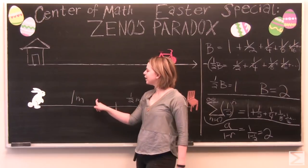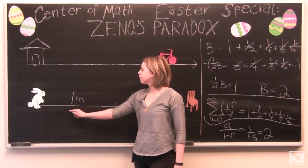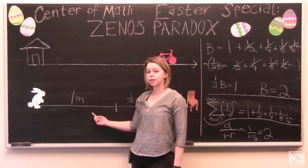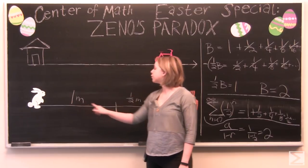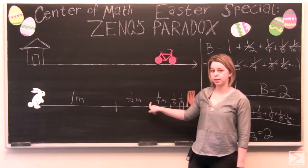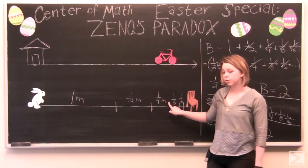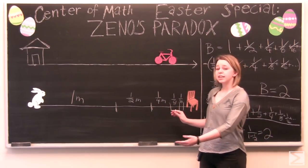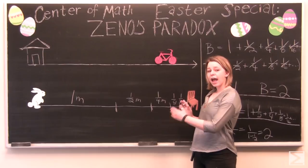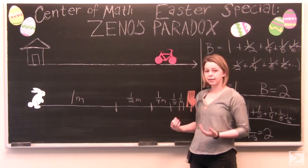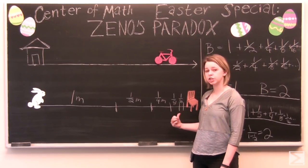So here, if each step took one second. If the Easter Bunny traveled one meter in one second. And then one half meter in one second. And then one quarter meter in one second. Then the Easter Bunny is traveling an infinite amount of halves in an infinite amount of time. And he will never reach the chair.